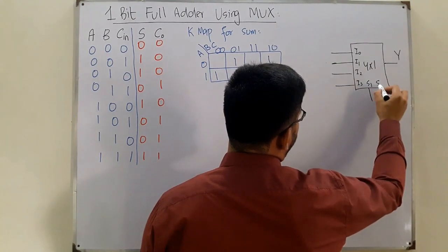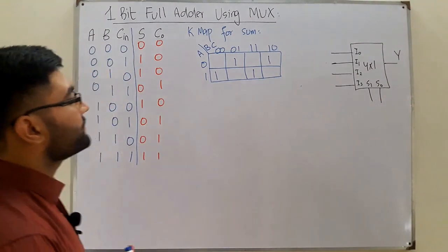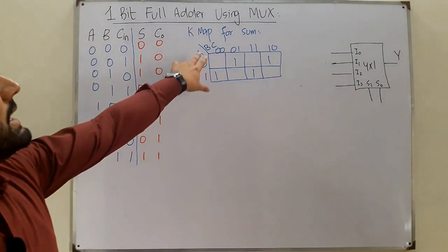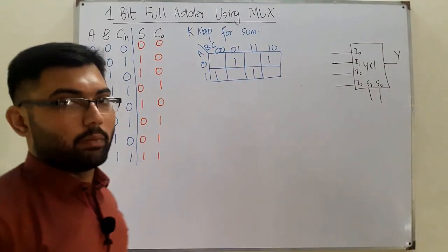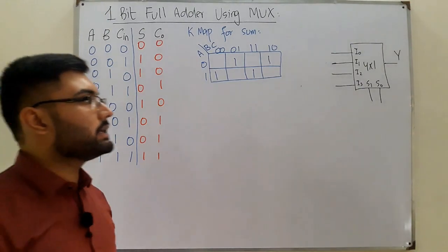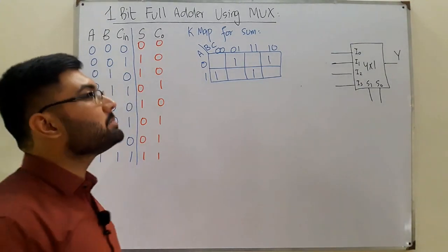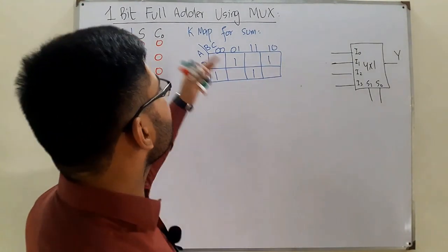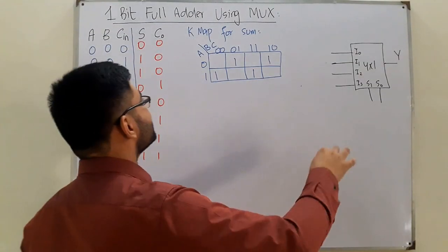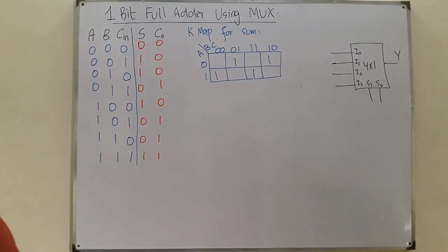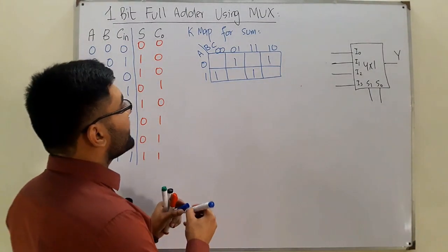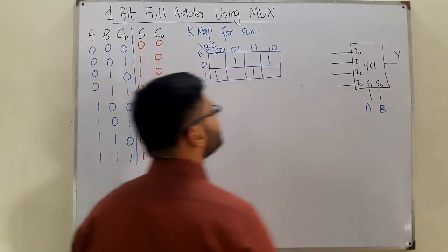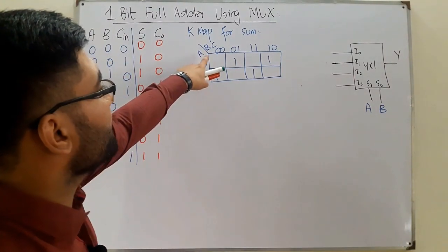You need to select your select lines first from the three inputs. If you select B and C as select lines, it's simpler — that's your homework. I'll take the case with A and B as select lines: S1 = A and S0 = B.